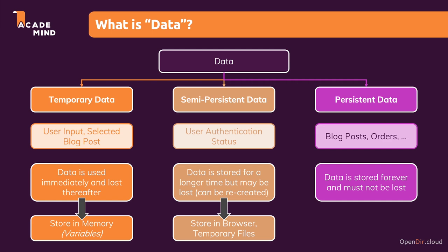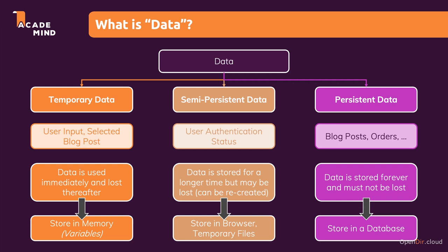Such persistent data should typically be stored in a database. In the end, that's similar to storing it in a file, but databases provide a more convenient way of inserting, deleting, and querying data, and give us optimizations to retrieve data faster. So those are the three categories of data. We're going to look at semi-persistent data later in the course when we dive into sessions. We've already looked at temporary data. And now in this module, I want to focus on persistent data — storing data in a database, getting data from there, updating it, and deleting it — because that is crucial for basically any website, and you should know how to do it with Django.